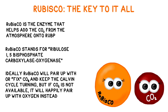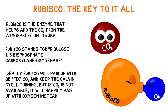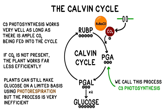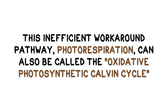However, if for any reason there isn't enough carbon dioxide to occupy Rubisco, it's very flexible and will happily pair up with oxygen instead. That wouldn't be a huge problem, except that oxygen doesn't contain any carbon, and plants need to get carbon from somewhere in order to keep photosynthesizing. Plants do have a workaround where they can slowly recoup carbon to keep the cycle turning, but it's not ideal. This process is called photorespiration, or if you want to get fancy, the oxidative photosynthetic Calvin cycle.